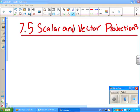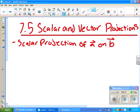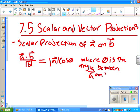Now it's time for section 7.5, scalar and vector projections. A projection of one vector onto another can be either a scalar or a vector. The difference is that the vector projection has a direction, whereas a scalar projection only has a magnitude. To determine the scalar projection of A onto B, you do the dot product of A and B divided by the magnitude of vector B. This equals the magnitude of vector A cos theta, where theta is the angle between A and B.